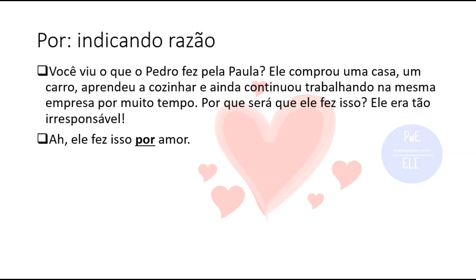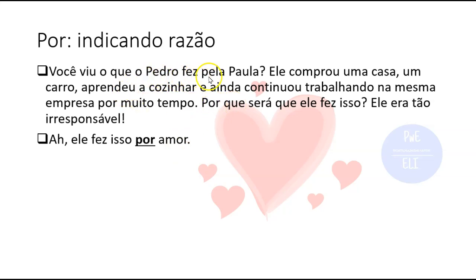POR is also used when you want to indicate reason — the reason why something was done. 'Você viu o que o Pedro fez pela Paula? Ele comprou uma casa, um carro, aprendeu a cozinhar e ainda continuou trabalhando na mesma empresa por muito tempo. Por que será que ele fez isso? Ele era tão irresponsável? Ele fez isso por amor' — he did it for love. You also use POR when you do something as a favor for someone: 'ele fez isso pela Paula.'